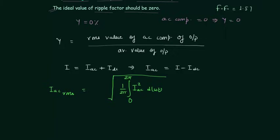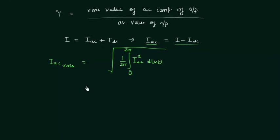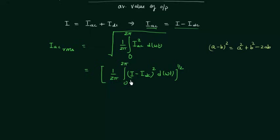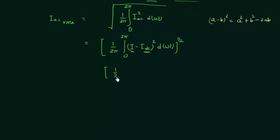Now I will simplify this. IAC is equal to I minus IDC, so we expand (I minus IDC) squared. Using A minus B whole square equals A² plus B² minus 2AB, where A equals I and B equals IDC, we get: (1/2π) × integration from 0 to 2π of (I² + IDC² − 2·I·IDC) d(ωt), all raised to the power 1/2.